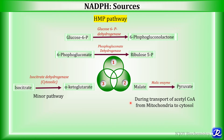The third source is through a minor pathway: conversion of isocitrate to alpha-ketoglutarate by the enzyme isocitrate dehydrogenase, but this is a cytosolic enzyme — different from the mitochondrial enzyme involved in the Krebs cycle. So these are the three important sources of NADPH, but the most important source is the HMP pathway.